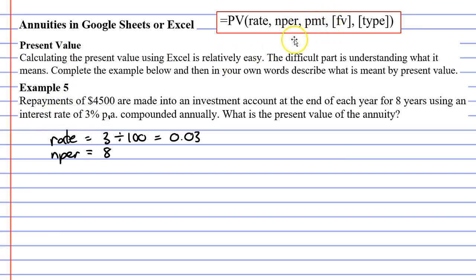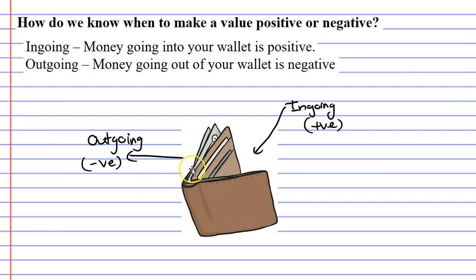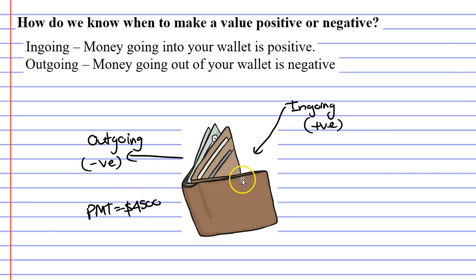We also need to write down our repayment or PMT, which is $4,500. Repayments are always negative, and I'll remind you why by referring to my image of a wallet. Ingoings are positive because it's money going into our wallet, and outgoings are negative. Repayments are always negative because that money comes out of our wallet — whether it goes into an investment account or pays off a loan, either way it's negative.